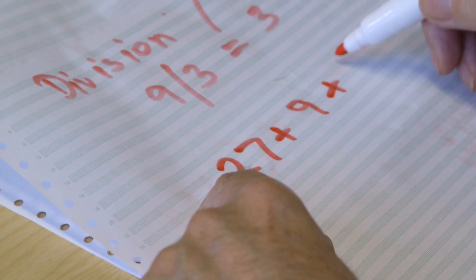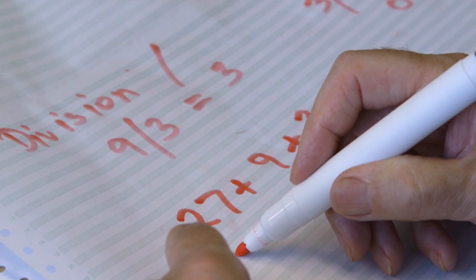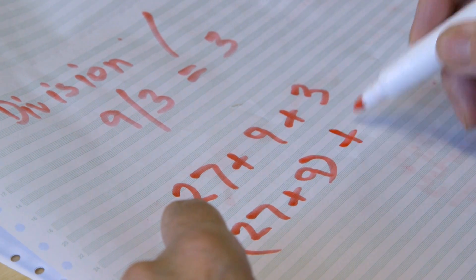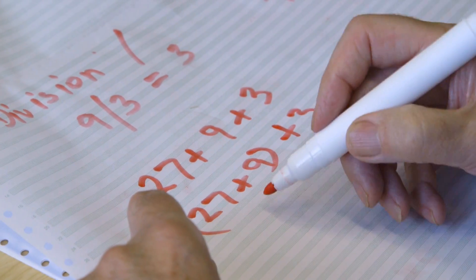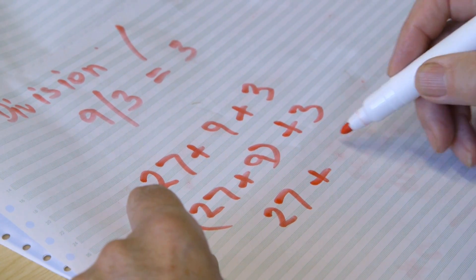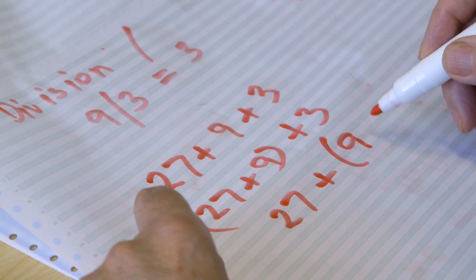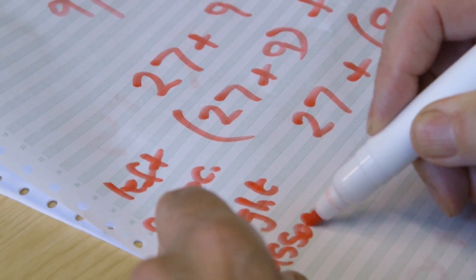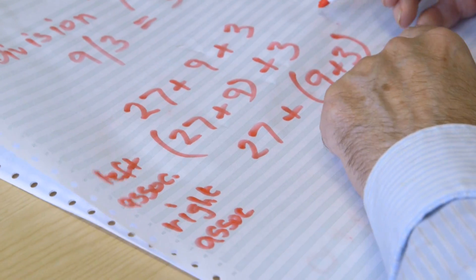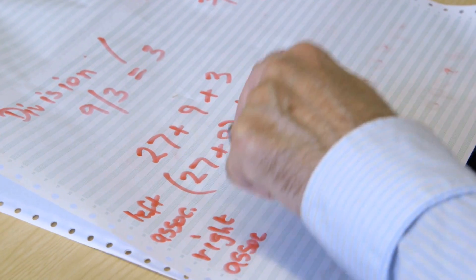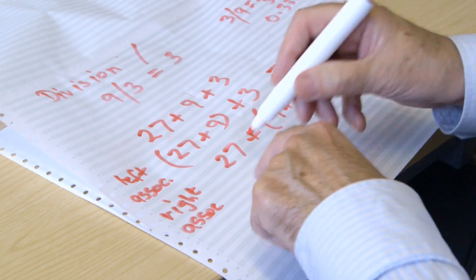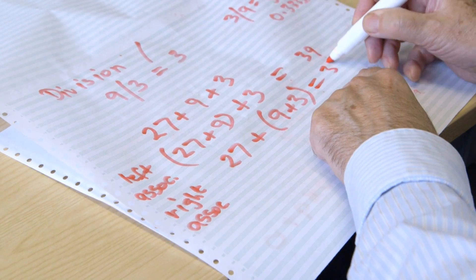27 plus 9 plus 3. Should it be add 9 to 27 first and then add 3? Or should it be keep the 27 and add it to what you get when you do the 9 plus 3? This is called left association. The other is called right associativity or right association. With plus there's very little problem — it doesn't matter at all.